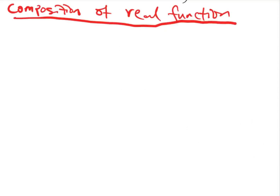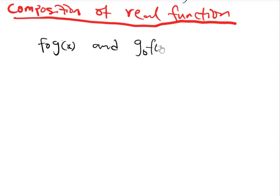The composition of a real-valued function is a way in which two real-valued functions can be joined together. Assuming we have two real-valued functions, f∘g(x) and g∘f(x). If you have f∘g(x), this is the same thing as f as a function of g(x).